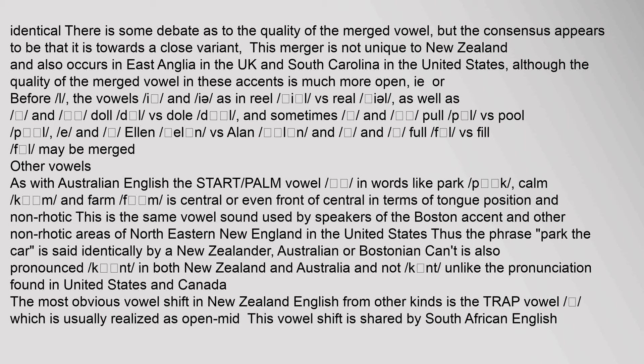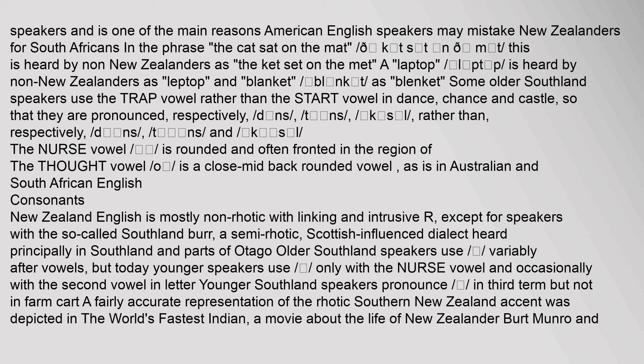As with Australian English, the Start/Palm vowel in words like 'park', 'com' and 'farm' is central or even front of central in terms of tongue position and is non-rhotic — the same vowel sound used by speakers of the Boston accent. Thus the phrase 'park the car' is said identically by a New Zealander, Australian or Bostonian. 'Can't' is also pronounced with this vowel in both New Zealand and Australia. The most obvious vowel shift in New Zealand English is the Trap vowel, which is usually realised as open-mid — a shift shared by South African English speakers and one of the main reasons American English speakers may mistake New Zealanders for South Africans.